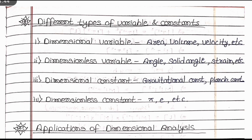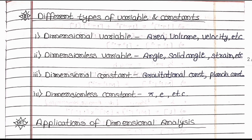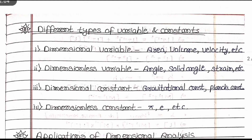Momentum, force, work, energy, and power are also derived quantities. Different types of variables and constants: dimensional variables include area, volume, and velocity. Dimensionless variables include angle, solid angle, and strain. Dimensional constants include gravitational constant and Planck's constant. Dimensionless constants include pi and e.